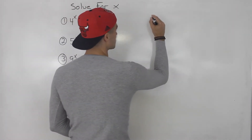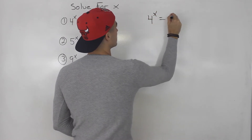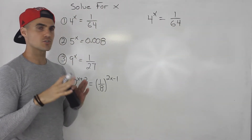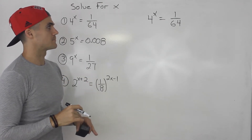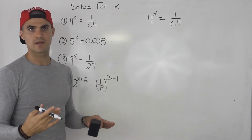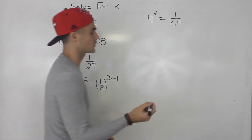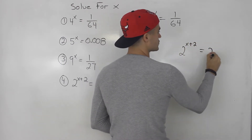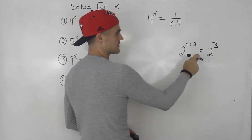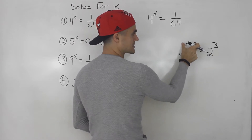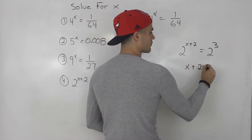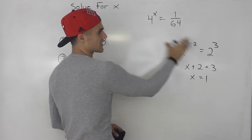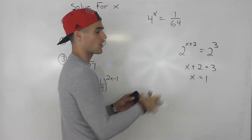Starting off with number one, I'm going to rewrite it over here. So we've got 4 to the power of x equals 1 over 64. What you want to do with these types of questions is make sure you have the same base on each side. Because if you have the same base on each side, you can just drop the bases and solve for the variables in the exponents. For example, if I have 2 to the power of x plus 2 equals 2 to the power of 3, because the bases are the same, x plus 2 has to equal 3, so x equals 1. We've got to get these equations into that format — same base — and then drop the bases.